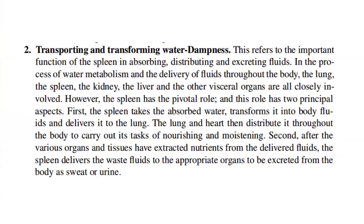Two: transporting and transforming water dampness. This refers to the important function of the spleen in absorbing, distributing, and excreting fluids. In the process of water metabolism and the delivery of fluids throughout the body, the lung, spleen, kidney, liver, and other visceral organs are all closely involved. However, the spleen has the pivotal role, with two principal aspects. First, the spleen takes the absorbed water, transforms it into body fluids, and delivers it to the lung. The lung and heart then distribute it throughout the body to carry out its tasks of nourishing and moistening. Second, after the various organs and tissues have extracted nutrients from the delivered fluids, the spleen delivers the waste fluids to the appropriate organs to be excreted as sweat or urine.